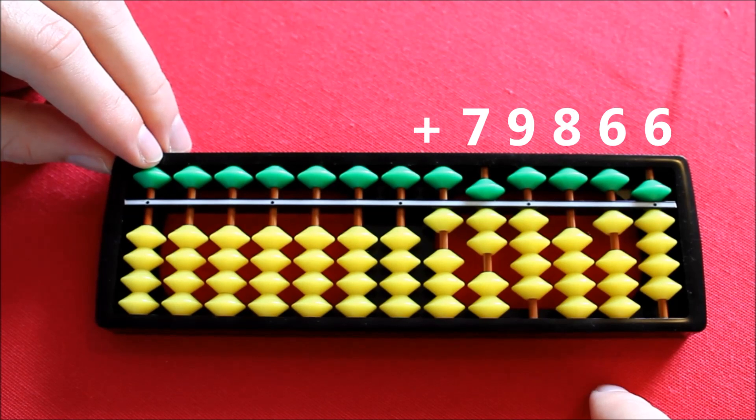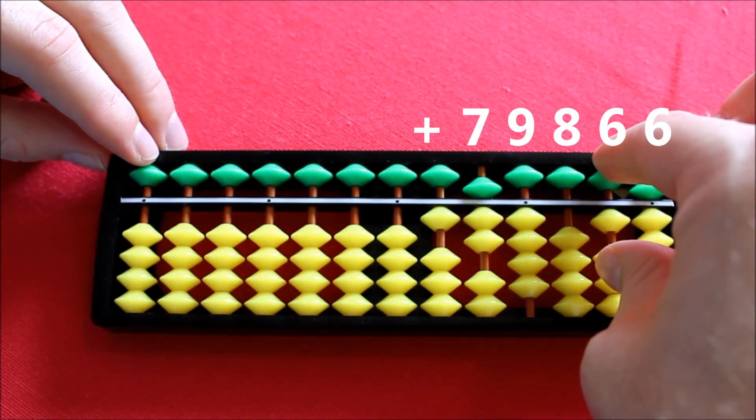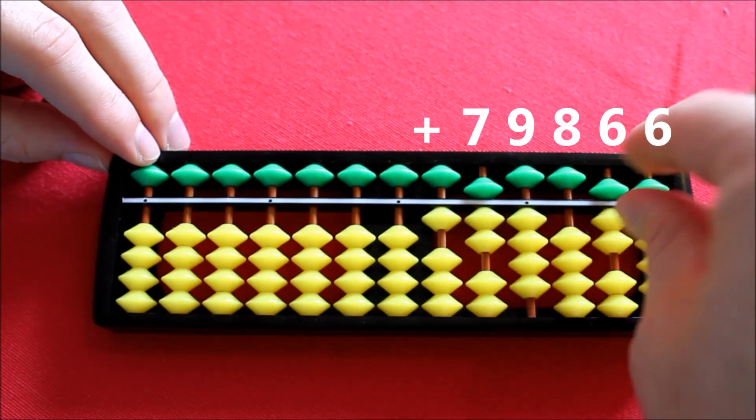Moving on into the second last column. And this time, we can add directly. We're adding 6. And we can just simply pinch these here. 5 and 1. And we've added 6.